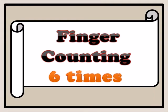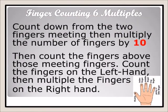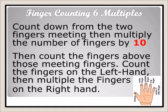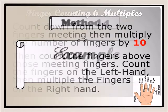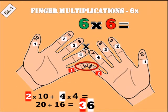Finger counting — six times table. The little finger is six, the ring finger is seven, the middle finger is eight, the pointing finger is nine, and the thumb is ten. Whenever two fingers meet, you count down, multiply by ten, and then multiply both hands together and add to whatever you arrive at. Example one: six times six.